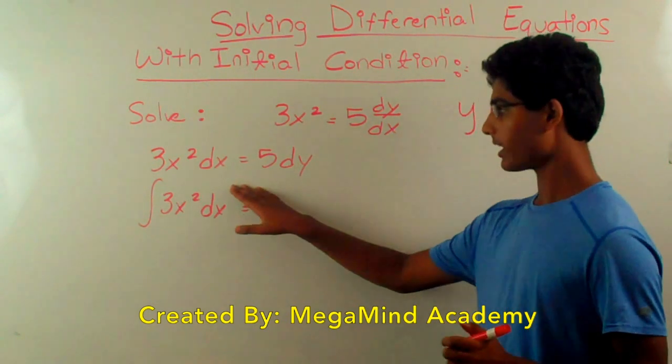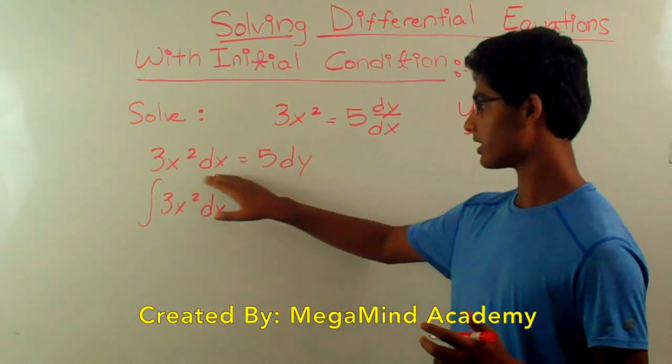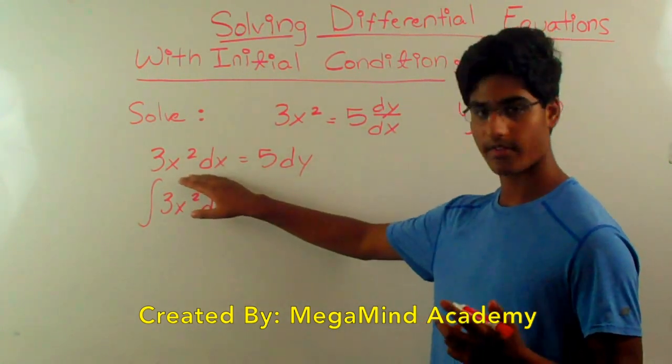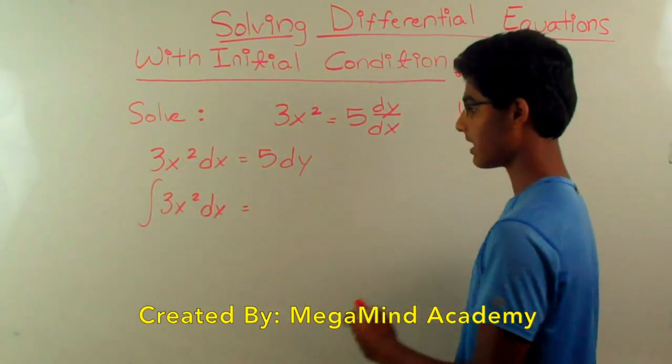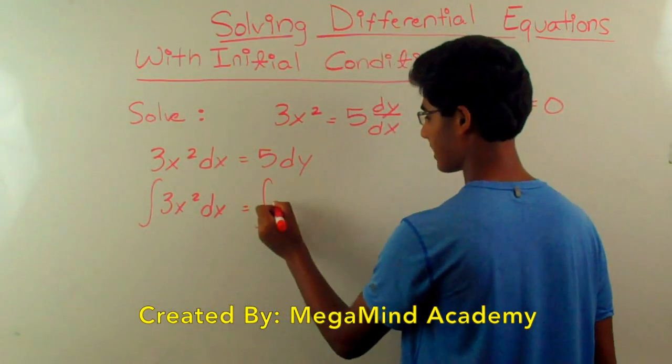So the objective of multiplying each function in terms of y with dy and a function in terms of x with dx is so that we can take the integral of them. And we know whatever we do on the left-hand side, we have to do on the right-hand side.